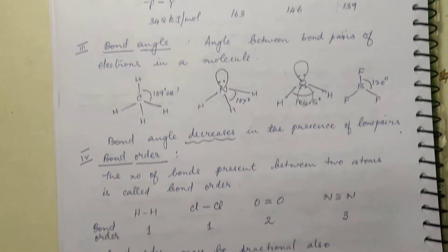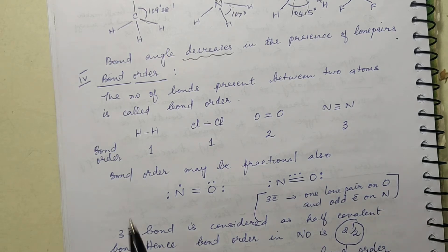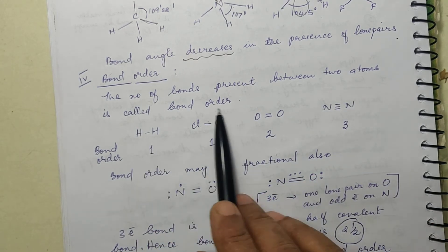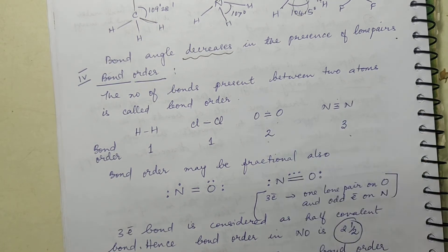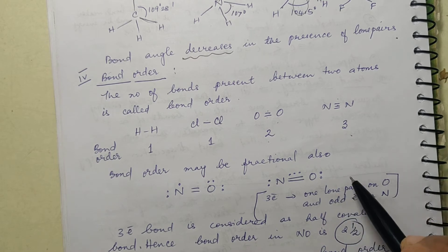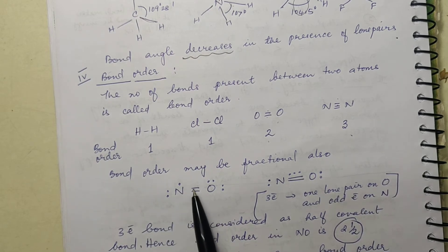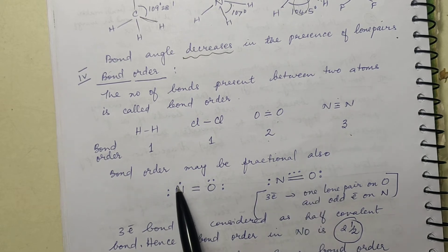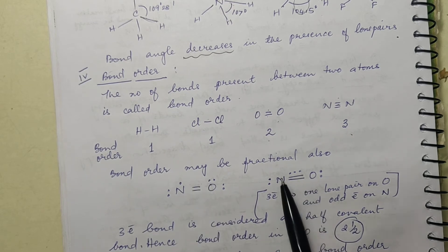Now the next property is bond order. Bond order is nothing but the number of bonds present between any two atoms. In hydrogen it is one, in chlorine it is one, in oxygen it is two, in nitrogen it is three. Surprisingly, bond order may be fractional also. In the case of NO, there is a double bond between the two atoms, and additionally there is a three-electron bond.